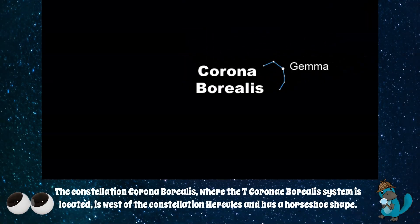And how can you see it? The constellation Corona Borealis, where the T. Coronae Borealis system is located, is west of the constellation Hercules and has a horseshoe shape.